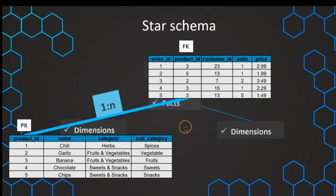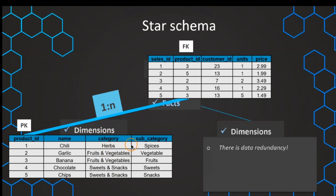For this star schema, since we have only one level of hierarchy — only one connection, with no further connections branching from it — we can have some data redundancy. For example, the category column is basically another level of hierarchy, and we have garlic and banana both in the category fruits and vegetables, so that value is repeated. This is a data redundancy because values are occurring twice, which would theoretically not be necessary. We'll see in the snowflake schema an alternative that reduces this data redundancy.